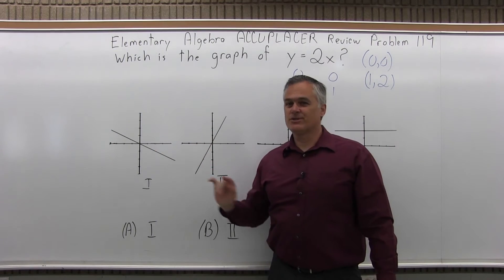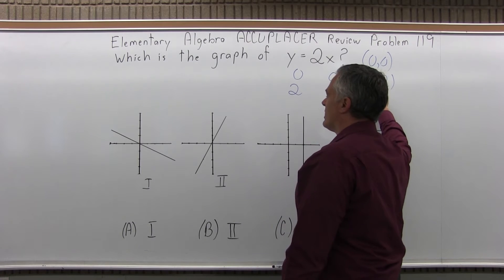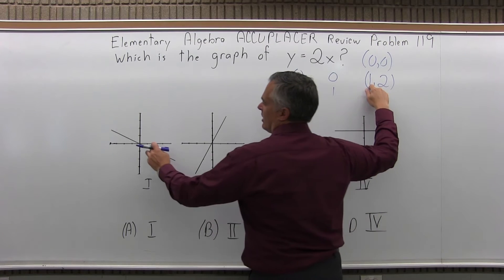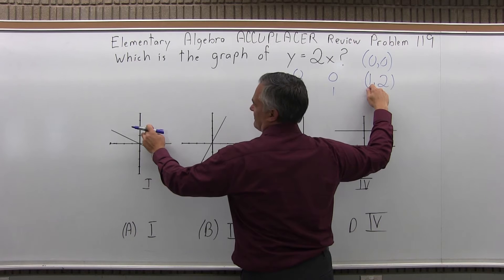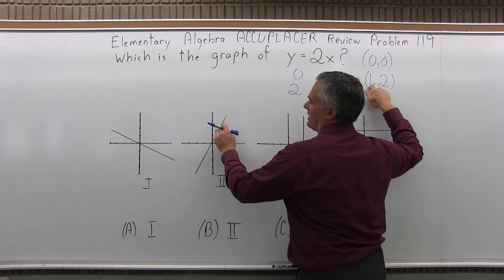The first two options do go through 0, 0. So let's look at the other point, over 1, up 2. Over 1, up 2. Nope, not hitting the line.